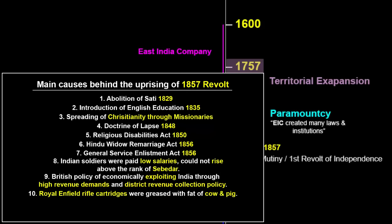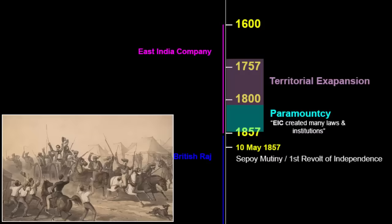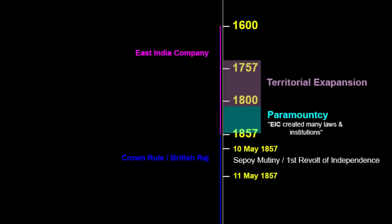On 26th February 1857, the 19th Bengal Native Infantry Regiment showed resentment over the new Enfield Rifles. The cartridge of the rifle was greased with fat of cow and pig, which was against the religious faith of both Hindu and Muslim soldiers. Mangal Pandey shot the first bullet at the British. When the mutiny started, the Indian troops went to the last Mughal Emperor Bahadur Shah Zafar for leadership. The British had disrespected him, which deeply hurt the sentiments of Indians, especially Muslims who held him in great respect.